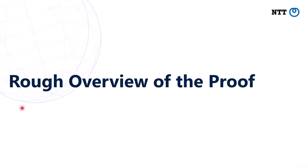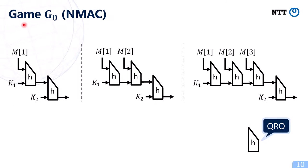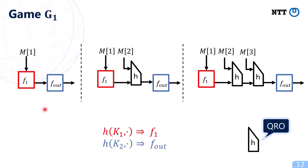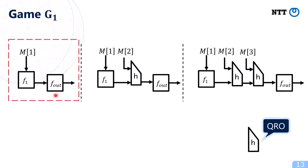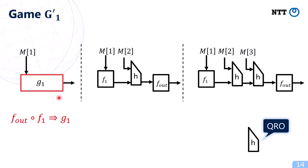Next, I'd like to explain a rough overview of the proof. In our proof, we consider a sequence of games. The first game G0 looks like this: the adversary is given quantum oracle access to the quantum oracle of NMAC and the quantum random oracle. This illustrates the case where the message is a one-block message, and this one illustrates the case where the input is a two-block message. Next, we change the keyed functions to two independent random functions — we call this game G1. Then we change the composition F1∘F1 into another random function F2, calling this game G2.